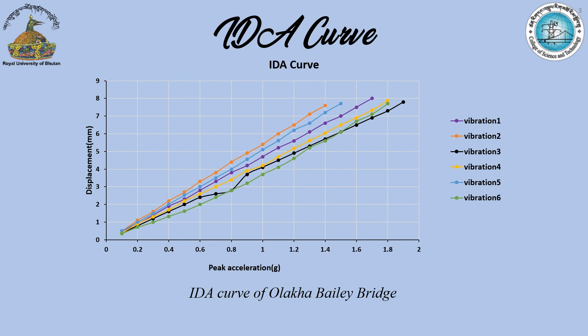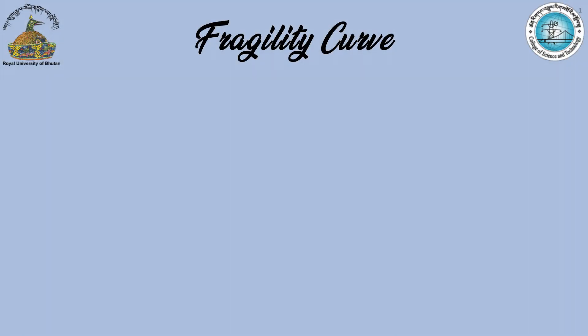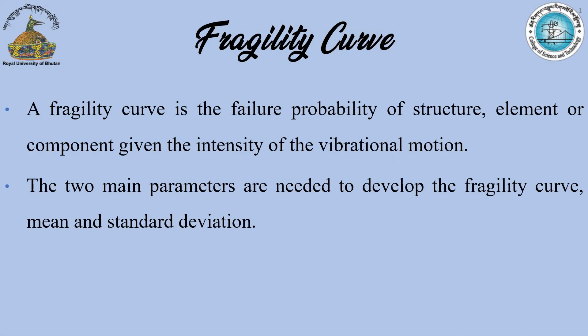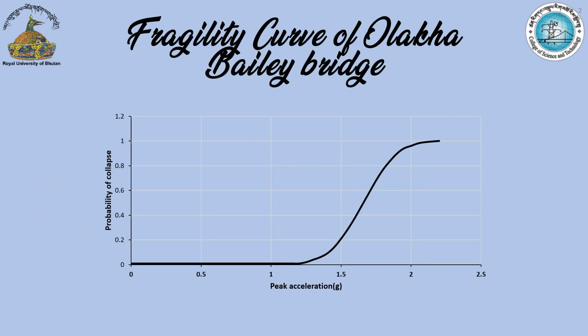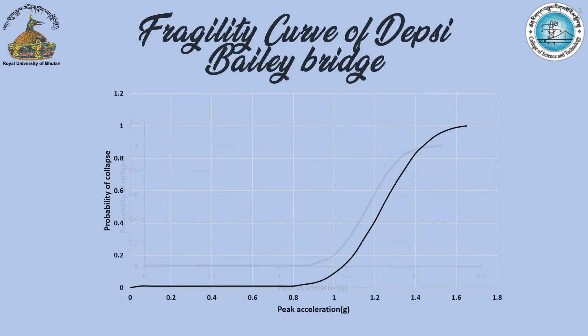Vibration intensity is gradually scaled up by increments of 0.1 g until reaching the bridge's maximum deflection. A fragility curve represents the failure probability of a structure, element, or component given the intensity of the vibrational motion. The two main parameters needed to develop the fragility curve are mean and standard deviation.